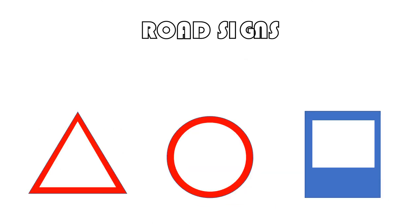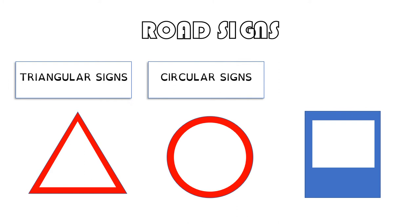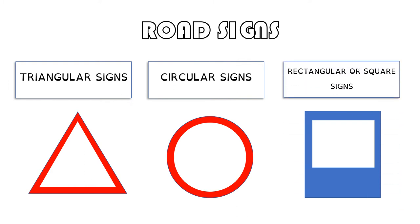We can find three types of road signs: triangular signs, circular signs, or rectangular or squared signs.